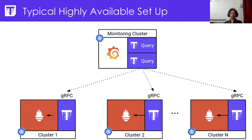A typical high-availability setup looks like this: you have multiple Prometheus instances running, scraping metrics from some cluster. You run a sidecar alongside them called the Thanos sidecar. You also run a central Thanos querier. Whenever you query the Thanos querier for some data, it does a gRPC API call to all the sidecar instances to collect that data, and the Thanos sidecars proxy this to the Prometheus running there.